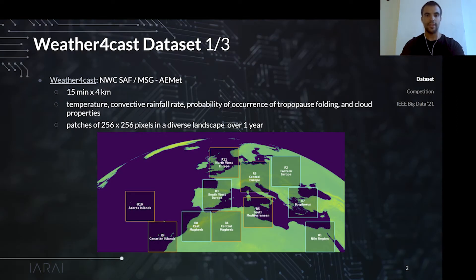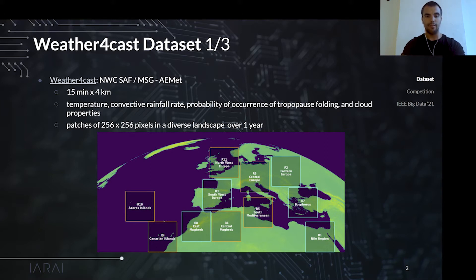The Weather Forecast Dataset is created to easily allow machine learning models to predict weather. In particular, Weather Forecast represents multiple variables, like rain rate or temperature, with a high resolution of 4 square meters per pixel updated every 15 minutes. We constructed 11 patches of 256 times 256 pixels, covering a very diverse set of regions over one year.